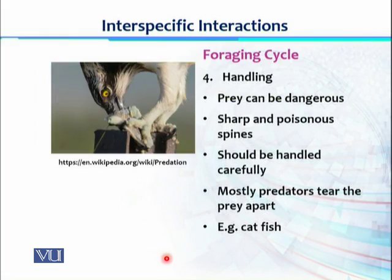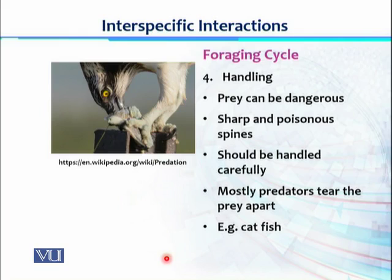After capture, the last stage of the foraging cycle is handling. Even though the prey is captured, it has its own defense mechanisms. Some animals have very sharp bones, spines, venom glands, or mechanically tough skin. In that case, if the predator feeds without any strategy, these spines and poison glands could harm the predator even after the prey's death. Predators must carefully handle the prey — often tearing it apart. For example, catfish have very sharp spines, so predators feeding on catfish must carefully open or tear apart the catfish to protect themselves from its sharp bones.